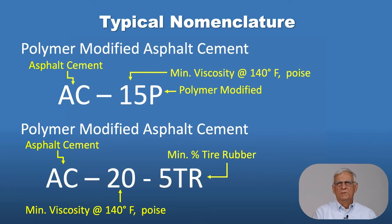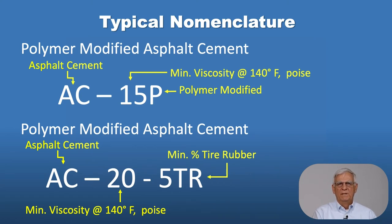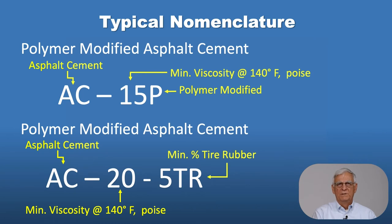Some of the typical nomenclature for these materials: we use AC for asphalt cements. The 15 talks about the minimum viscosity measured at 140 degrees Fahrenheit, and P equals polymer modified. The AC 20-5TR has a viscosity of 2,000 at 140 degrees Fahrenheit, it has 5% tire rubber in it, and it typically has some other types of polymer in these materials as well.